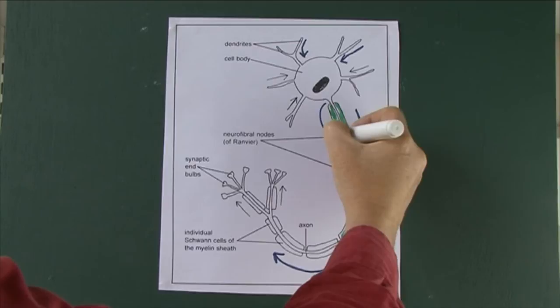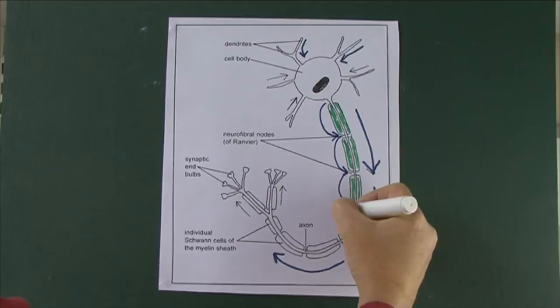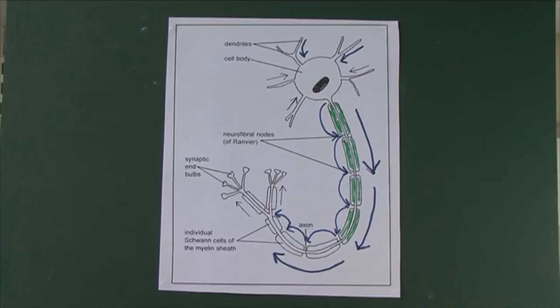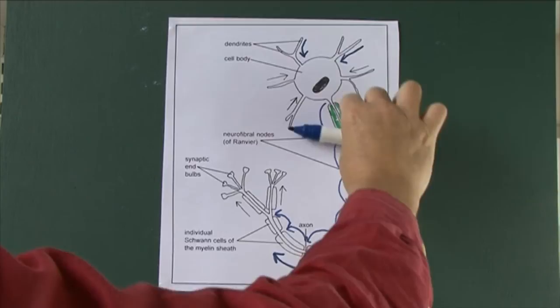The nodes between the Schwann cells, now called neurofibral nodes, facilitate rapid neuronal transmission. The nerve impulse can bounce from one neurofibral node to the next in a process called saltatory transmission, which greatly increases transmission speed — even 100 meters per second or more in some myelinated fibers. A very rapid rate of transmission.